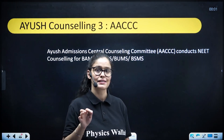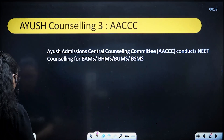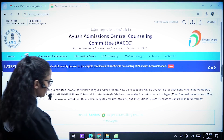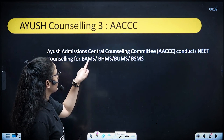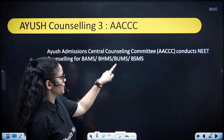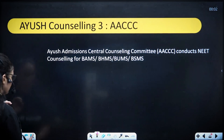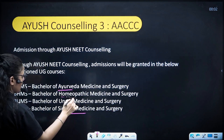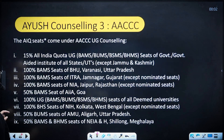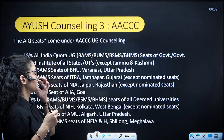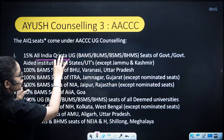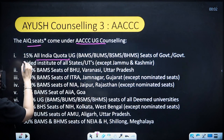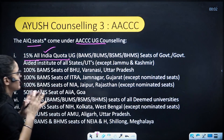Now we will talk about AACCC — the Ayush Admissions Central Counseling Committee. You have to visit the AACCC website for AYUSH counseling. The website is aaccc.gov.in, where you register. For BAMS (Ayurveda), BHMS (Homeopathy), BUMS (Unani), and BSMS (Siddha Medicine and Surgery), you fill the registration form on AACCC for the 15% All India Quota.